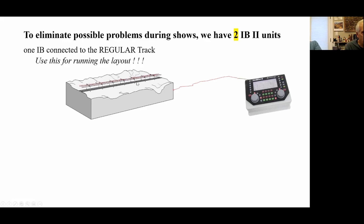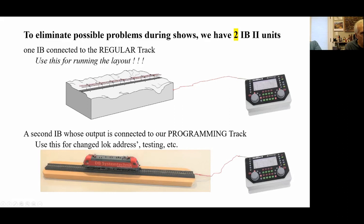The way we have this set up, we don't want to be messing around on the main line and accidentally program something incorrectly. So we have two IntelliBoxes. One of them is connected to the layout as we've always done, and our second IntelliBox is connected to the programming track. This is where you can go in and change your loc's address or test it or whatever. They are two totally separate boxes — you could mess around and if you screw something up, you're not going to affect the main running of the layout for our visitors.